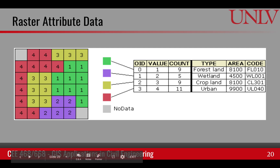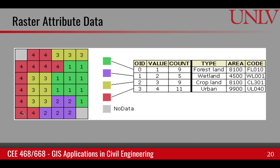Looking at the attribute data of a raster matrix: if this is classified data where value 1 represents one feature and value 2 represents another, the raster attribute table takes these pixel classes and provides their attributes. Values 1, 2, 3, and 4 are identifiers for four classes, and each gets a row in the attribute table. One column records the pixel value, and another records how many pixels belong to that class — for example, class 1 has nine pixels.